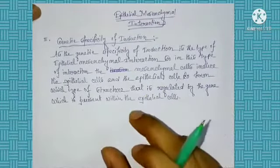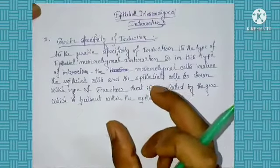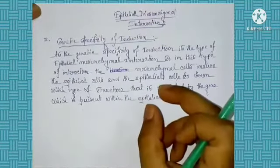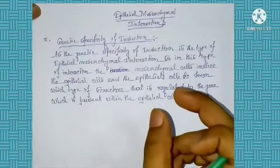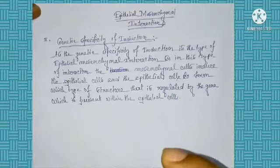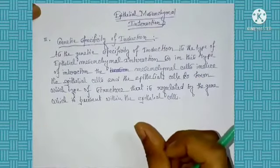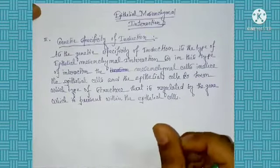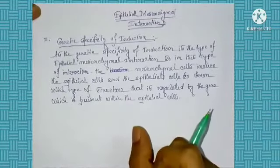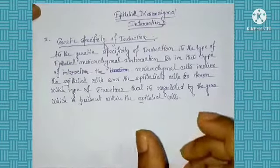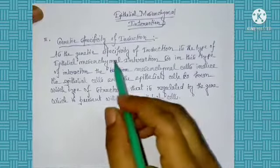In the previous class we discussed the regional specificity of induction. In that type of induction, the mesenchymal cell of a particular region induces the epithelial cell of another region to form a particular structure, and this structure is related to the region from where the mesenchymal tissue is originated. The new tissue which forms during regional specificity of induction is related to a specific region from where the mesenchymal tissue is originated.